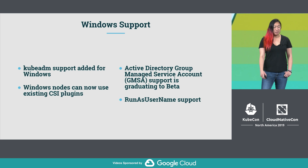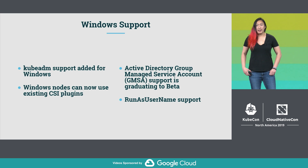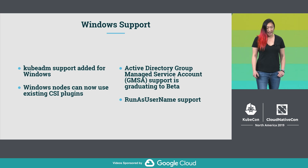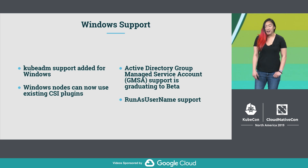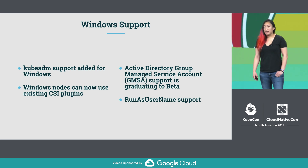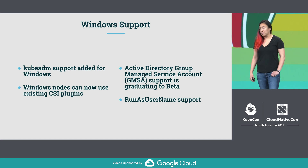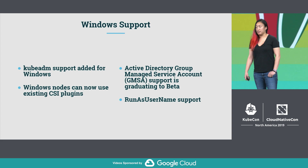Active Directory group managed service accounts is graduating to Beta. This means that at deployment time, you can choose the GMSA and run containers using it to connect to existing applications such as your database, and you can remain compatible with how authentication and authorization are managed inside your organization. With this new feature, you can also use the RunAsUsername Windows-specific property to define which user will run your container's entry points. This is an alpha feature that you have to enable when you run 1.16.